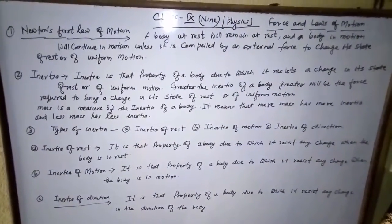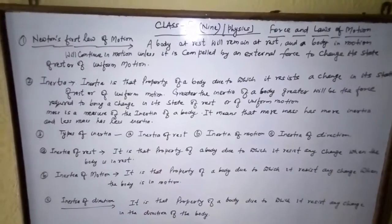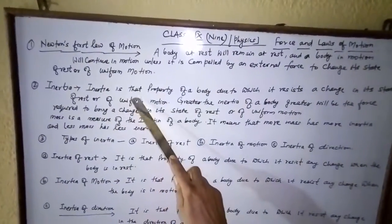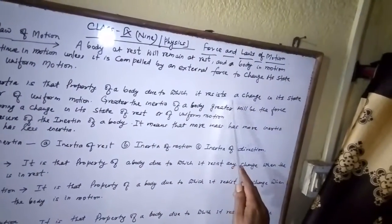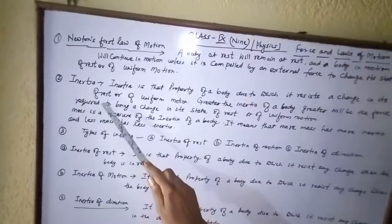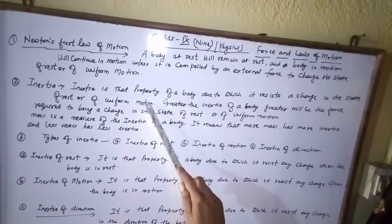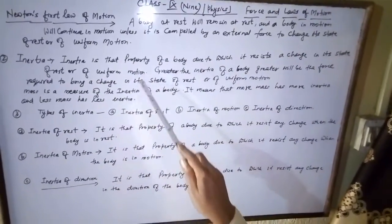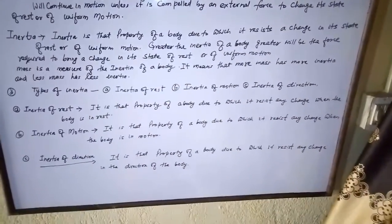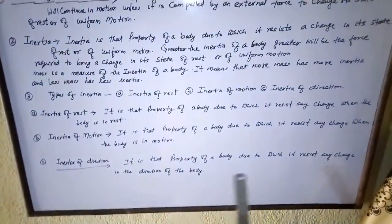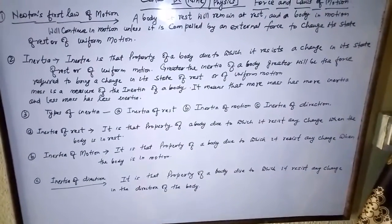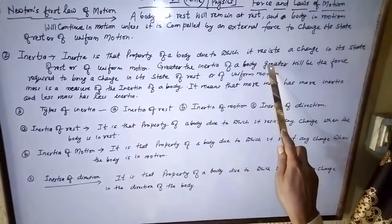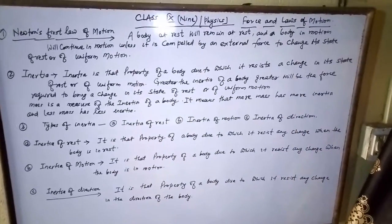We will now discuss inertia. Inertia is that property of a body due to which it resists any change in its state of rest or of uniform motion. Inertia is the property of a body that resists any change — whether the body is at rest or in motion.